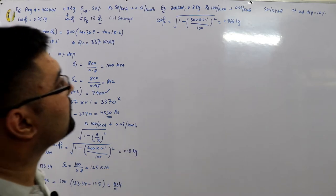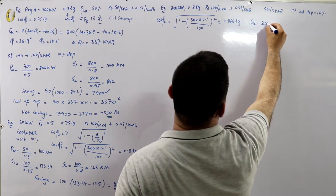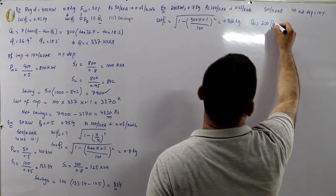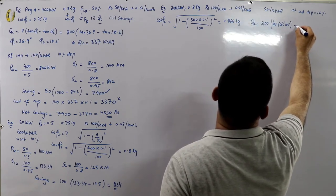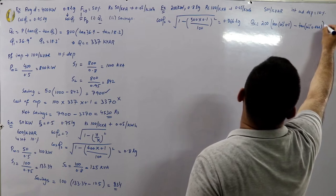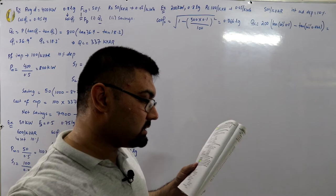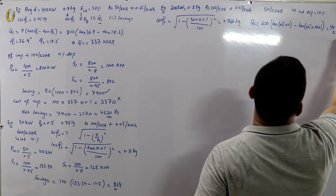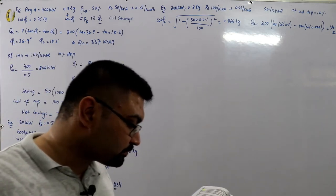Next, find the capacity of the phase advancing plant. Qc = P × (tan φ₁ − tan φ₂). P = 200 kilowatts (no demand factor given, so connected load = maximum demand). φ₁ = cos⁻¹(0.8) and φ₂ = cos⁻¹(0.866). The kVAr rating of the capacitors comes out to be 34.52 kVArs leading.